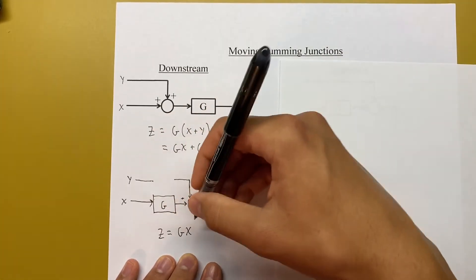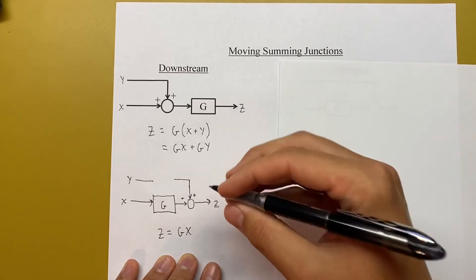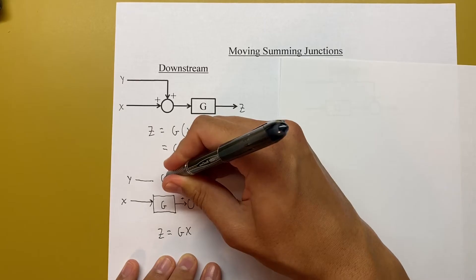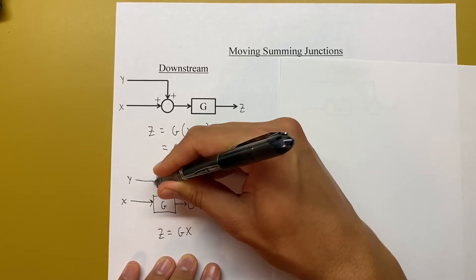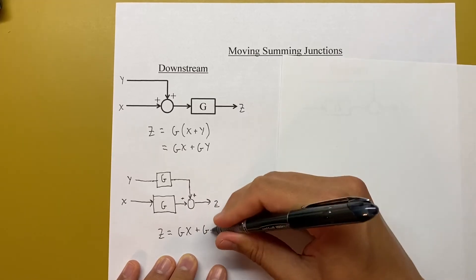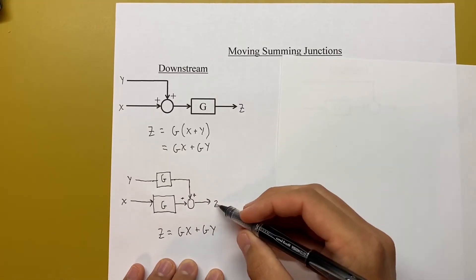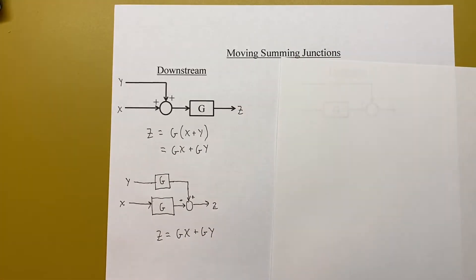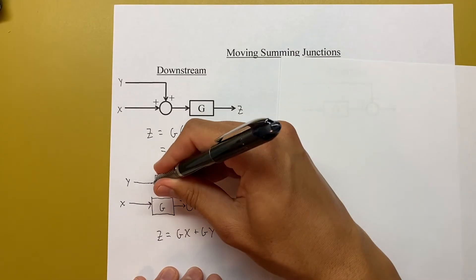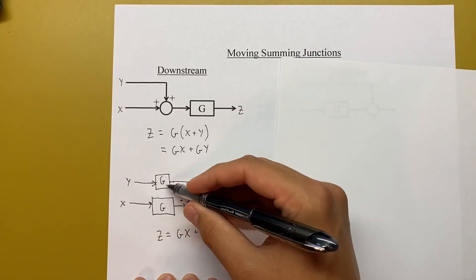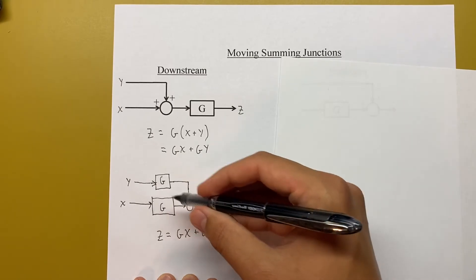So both z expressions are equal, confirming these two diagrams are equivalent. The rule is: when you move a summing junction downstream, you have to multiply the branch that was added by whatever block you jumped over.